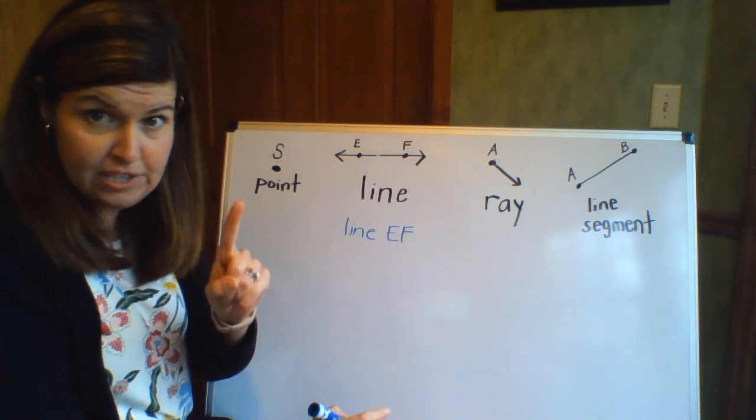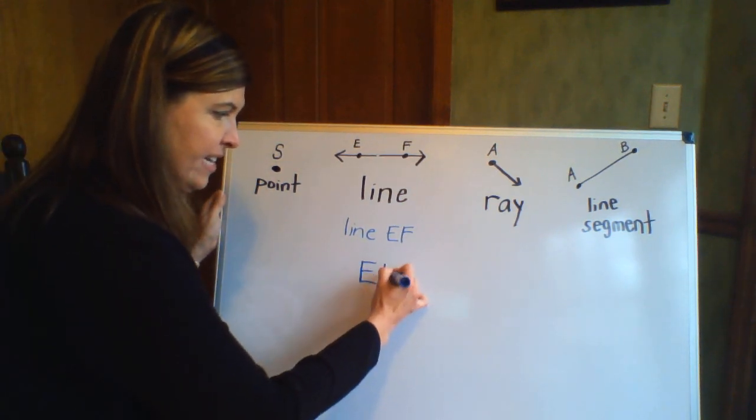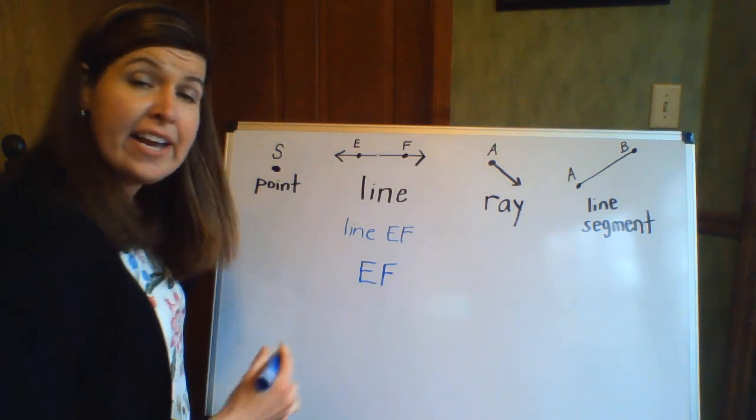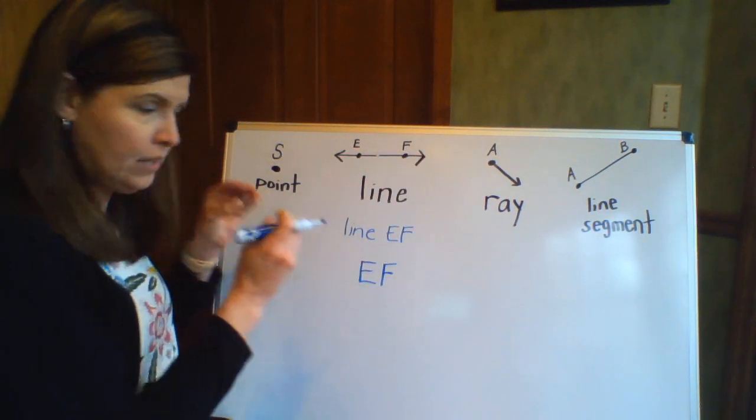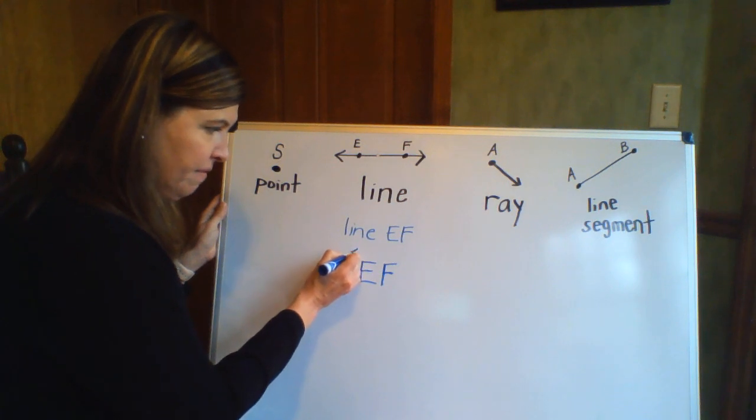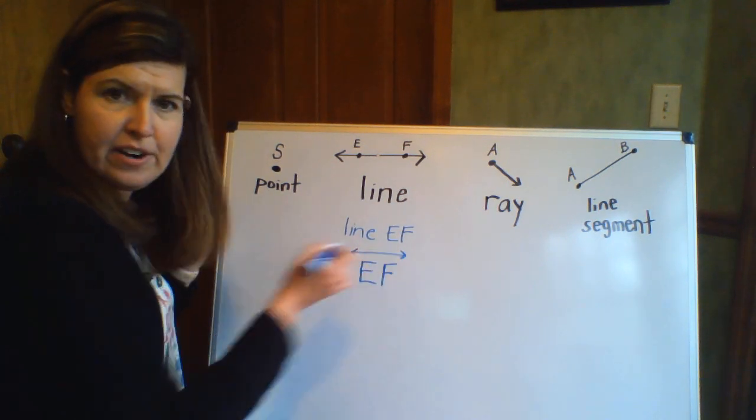The other way that I can do it is I can write my points that I have on it, E and F, and then I could tell everybody that it's a line by writing the symbol for a line, which is a line with the arrows on either end.